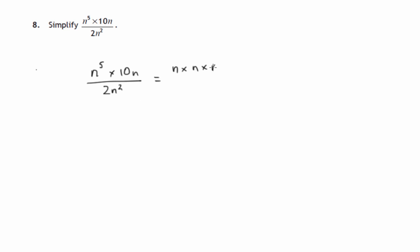n to the power 5 times 10 times n divided by 2 times n squared. Because we're in a fraction, we can divide top and bottom by the same number. We can divide top and bottom by n and another n and by 2.